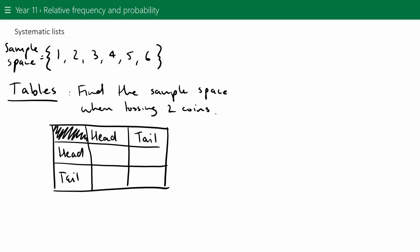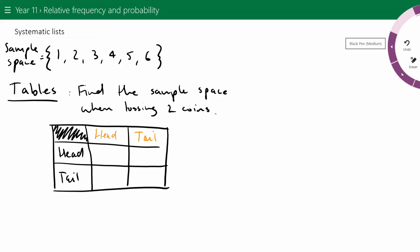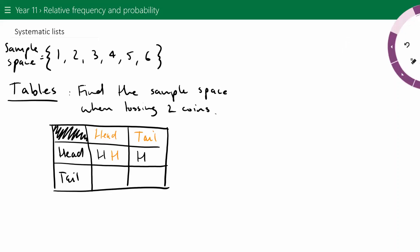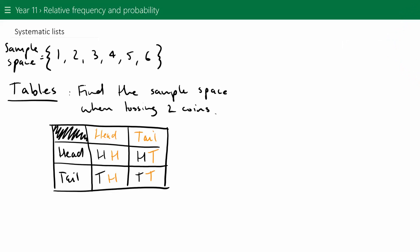So the first coin along the top row could be a head or a tail, and down the side the second coin could also be a head or a tail. When you toss two coins, you get: head and head, head and tail, tail and head, and tail and tail. So there are four elements in our sample space.